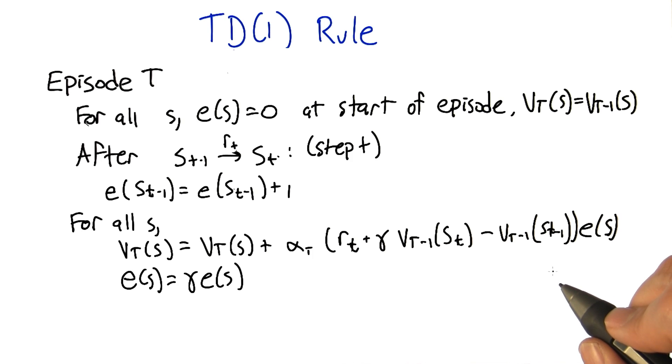So I think this leaves us in a position where we can actually state the TD(1) update rule. It looks a little hairy, but we're going to be able to go through it and see that it does something very sensible, or at least somewhat sensible.